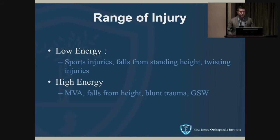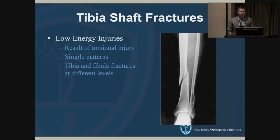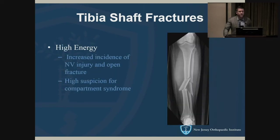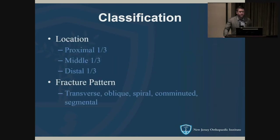Bimodal distribution. The low energy injuries are typically torsional, simple patterns — often the tibia and fibula fracture at different levels. Higher energy injuries have increased incidence of neurovascular compromise as well as open fractures, and you have heightened suspicion for compartment syndrome.